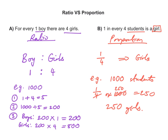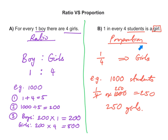I hope it's clear now the difference between a ratio and a proportion. To summarise: in a ratio, the quantity of one category is compared to the quantity of another — boys to girls. Whereas in a proportion, it tells us the relationship of the category to the total, to the whole — for example, one in every four students is a girl, meaning a quarter of the total students.